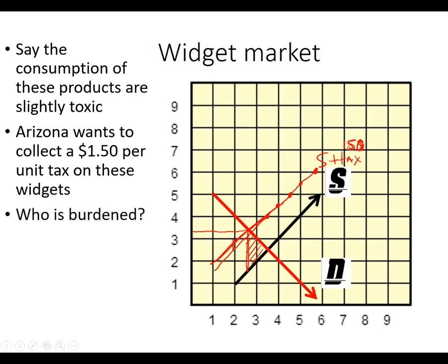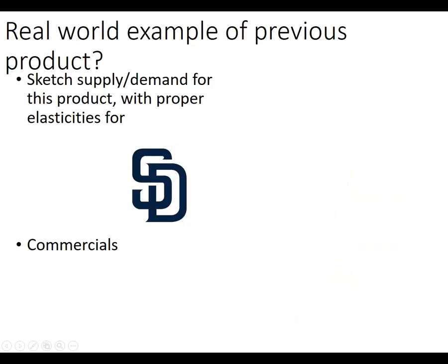Now we want to know who is burdened more. You look at who has the bigger portion of the deadweight loss — is it the consumers on the demand side or the sellers on the supply side? In this case they're equal because both sides have the same elasticity in this market. The general rule is just to look at whose deadweight loss is larger, and it all comes down to the elasticities.